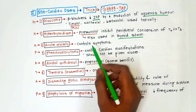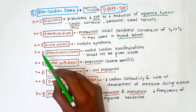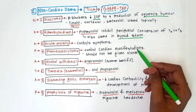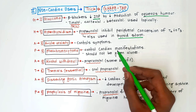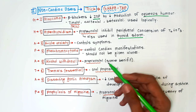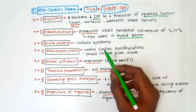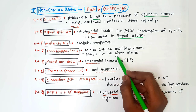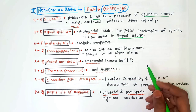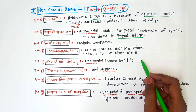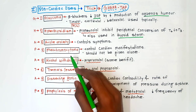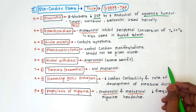For acute anxiety, beta blockers are used to control symptoms such as palpitations and sweating. For pheochromocytoma — a tumor of the adrenal gland — complications include a rise in blood pressure and heart rate. Beta blockers are used to control the cardiac manifestations, but they should not be given alone; they must be given with alpha blockers. If given alone in pheochromocytoma, there is a hypertensive crisis due to loss of the negative feedback mechanism.